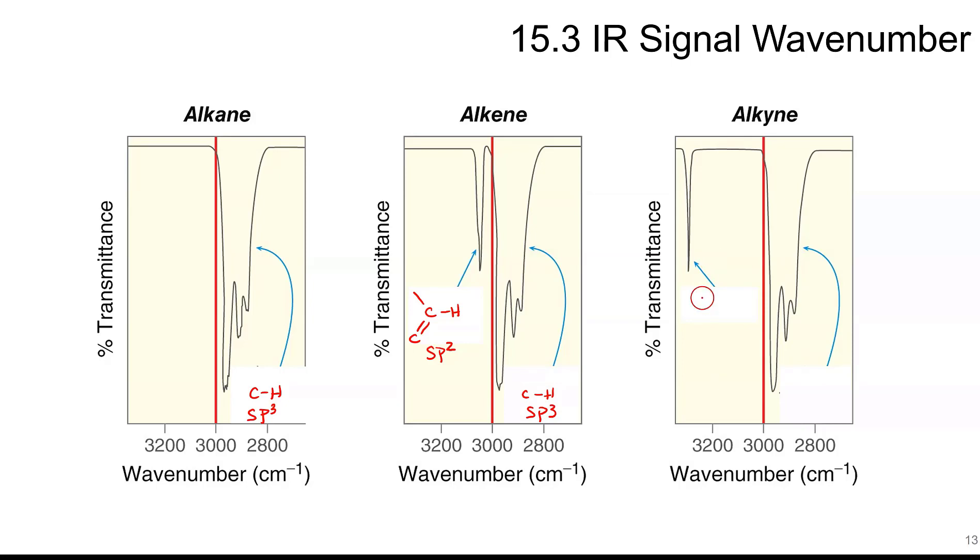For alkynes, which are SP CHs, those have a very characteristic peak and those show up around 3300. You can tell a lot of information for functional group wise and what kind of carbons you have from IR.